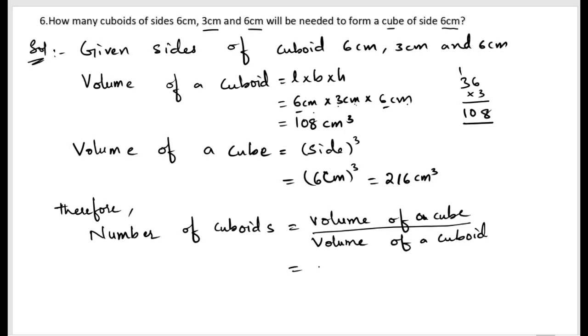Volume of cube is 216, volume of cuboid is 108. So 216 ÷ 108: if we multiply 108 × 2 = 216, therefore the number of cuboids required is 2.